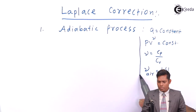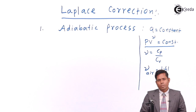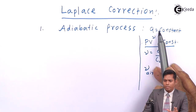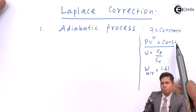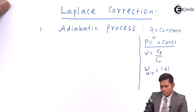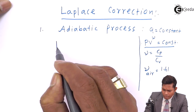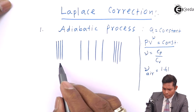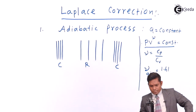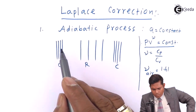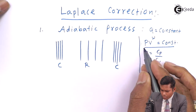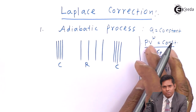This adiabatic equation PV^γ = constant has to be used. In Newton's case he used PV = constant (isothermal process), so this is just the modification: the process is not isothermal but adiabatic, and the equation to use is PV raised to gamma equals a constant. Using this equation during compression or rarefaction, we find the expression for the bulk modulus E.